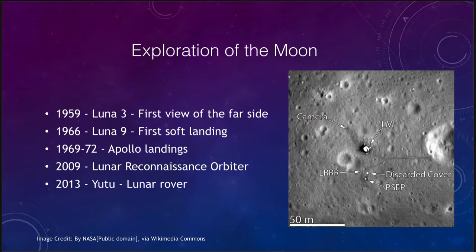The Lunar Reconnaissance Orbiter has mapped the moon in great detail over about a decade of exploration. It has been able to resolve things down to just a few meters. In this image it is looking at one of the lunar landing sites, where you can see where the lunar module would be, discarded materials, and various equipment left on the moon. Various other objects can be imaged by the reconnaissance orbiter, giving us much more detail than we've ever had before.